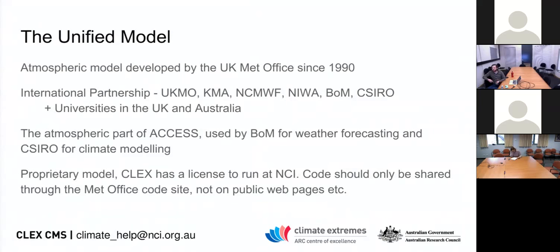Just a bit of background before we get started. The Unified Model is the atmospheric component of ACCESS, developed by the Met Office. It's a fairly old model — development started in the 1990s and it's been continually improved over time by the Met Office as well as an international partnership.